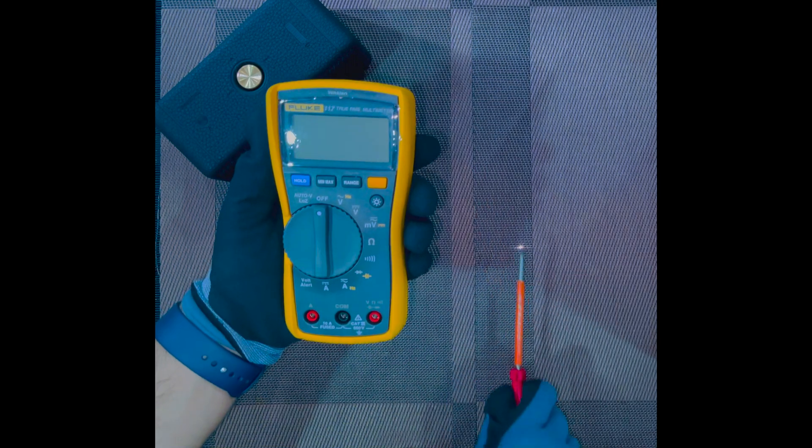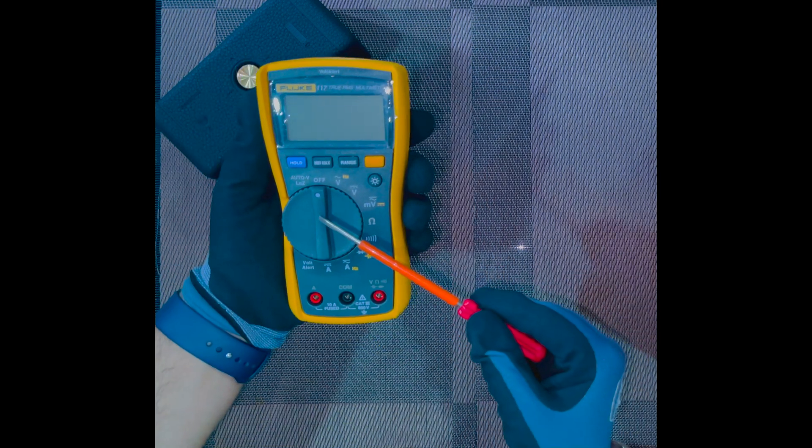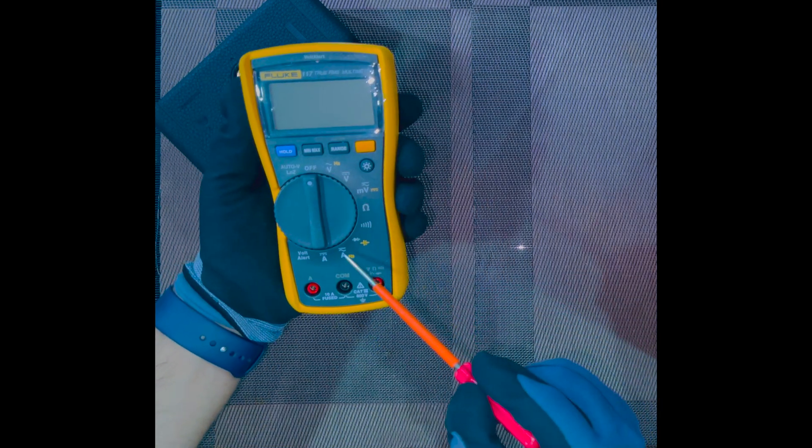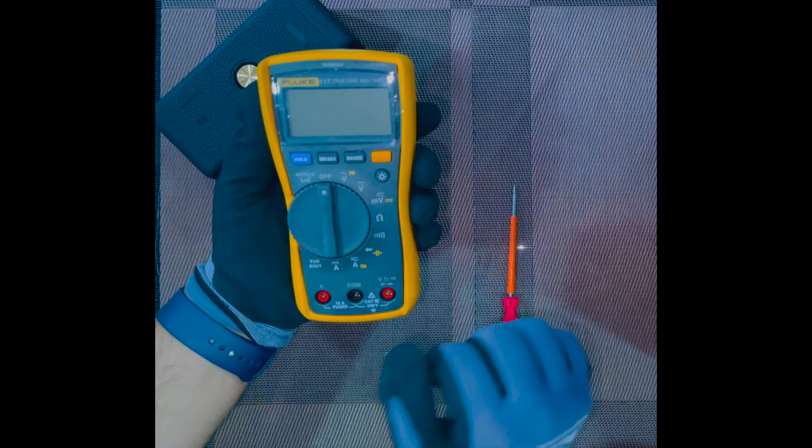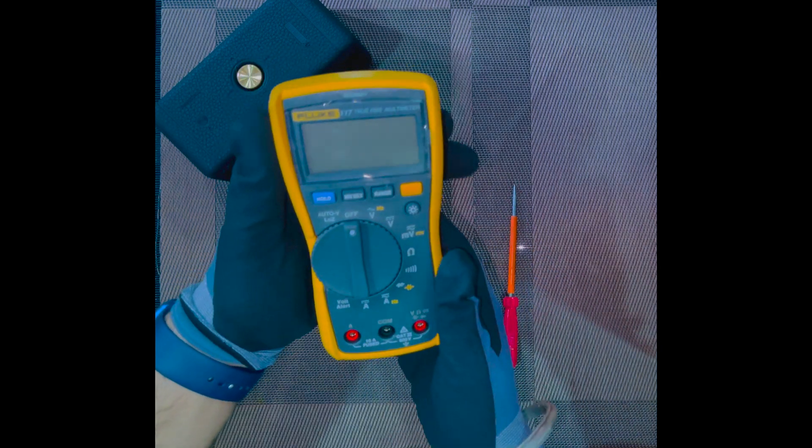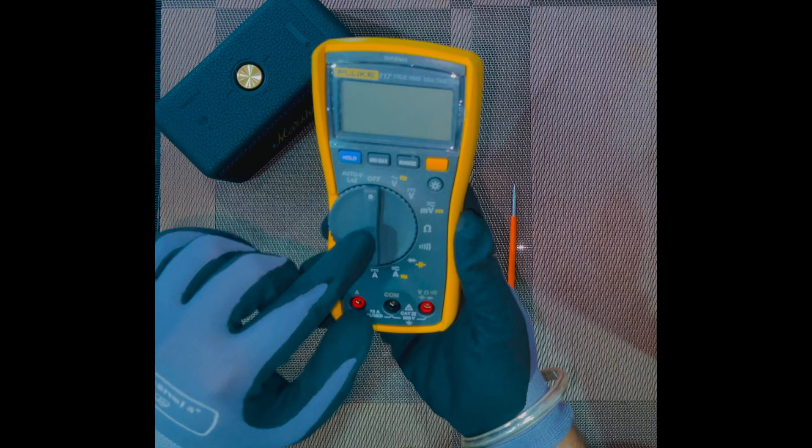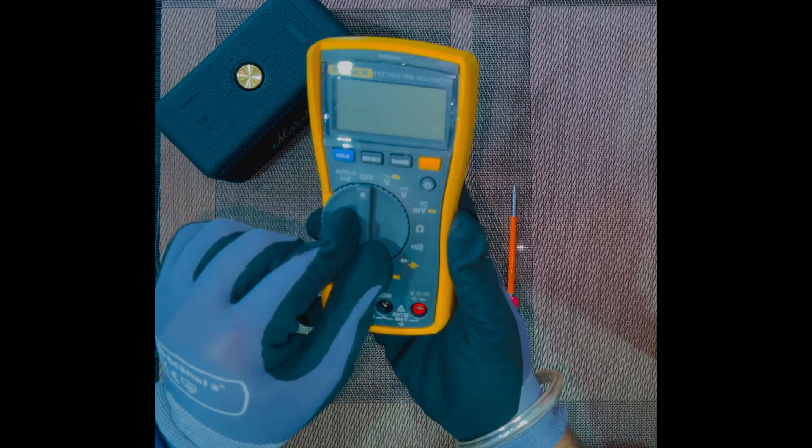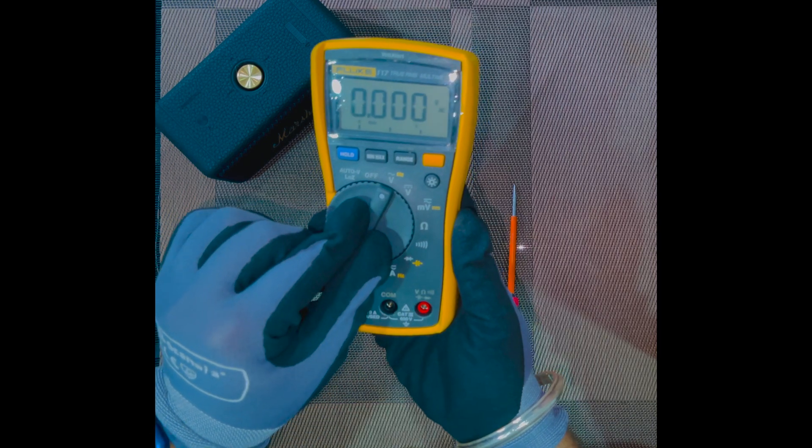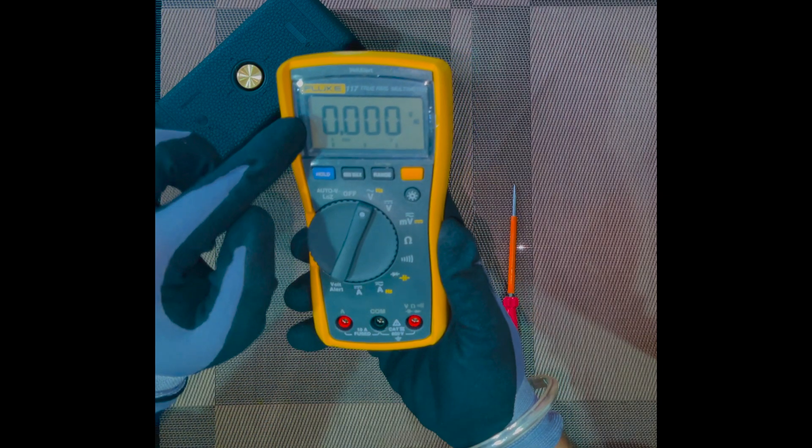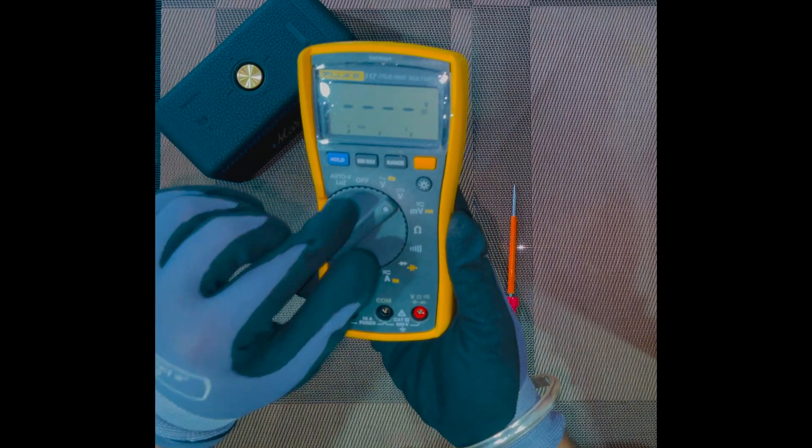In this episode we will learn about the selector switch and all the different modes that we can operate with the help of the selector switch. This selector switch allows us to change between the different operating modes. If you see on the digital screen of the meter, whenever we switch between the different modes it gives us some value.